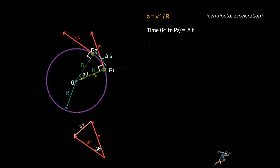Or we can write delta v upon v1 should equal delta s upon r or delta v should equal v1 into delta s upon r. So now that we know delta v, we can say that average acceleration that is delta v upon delta t becomes v1 upon r times delta s upon delta t.